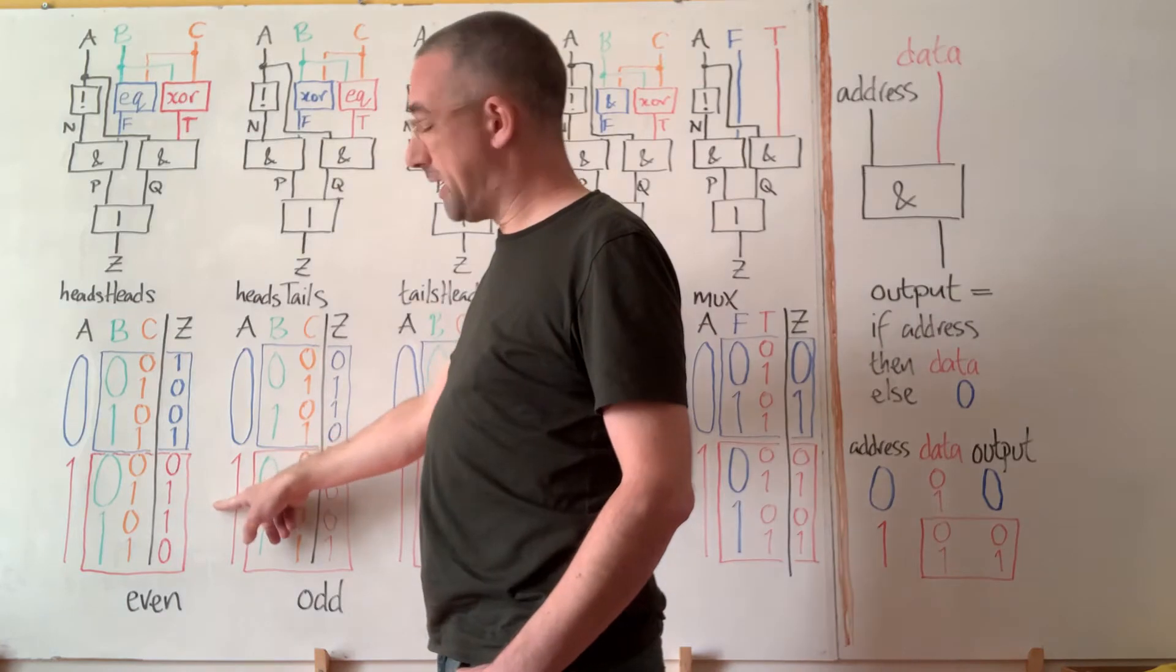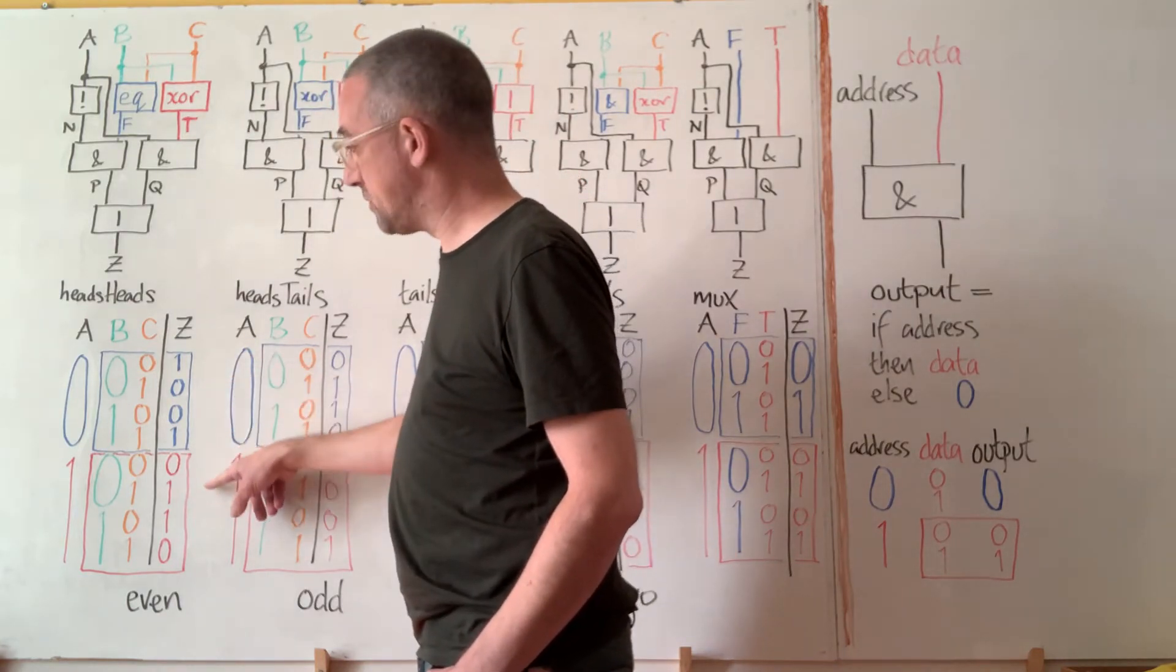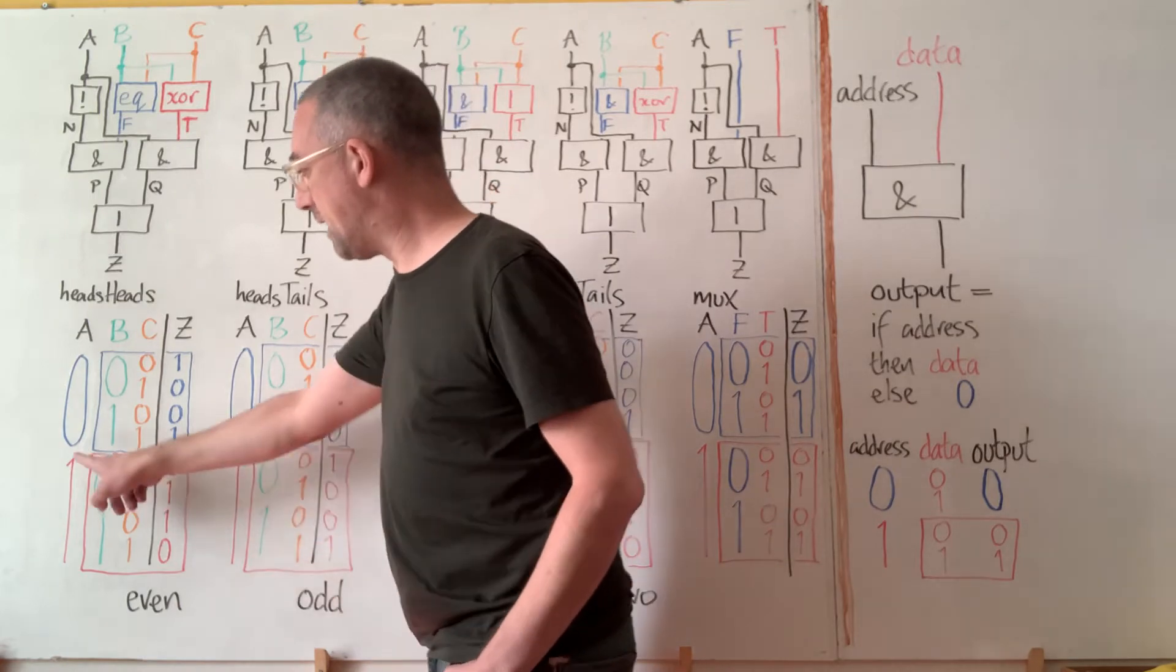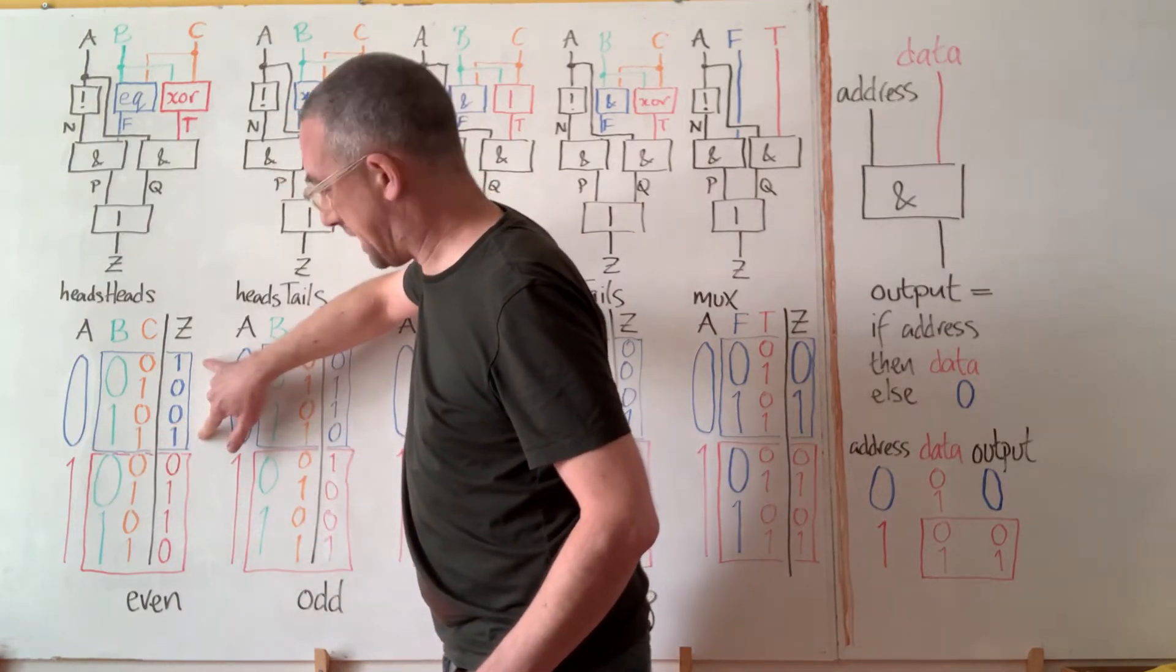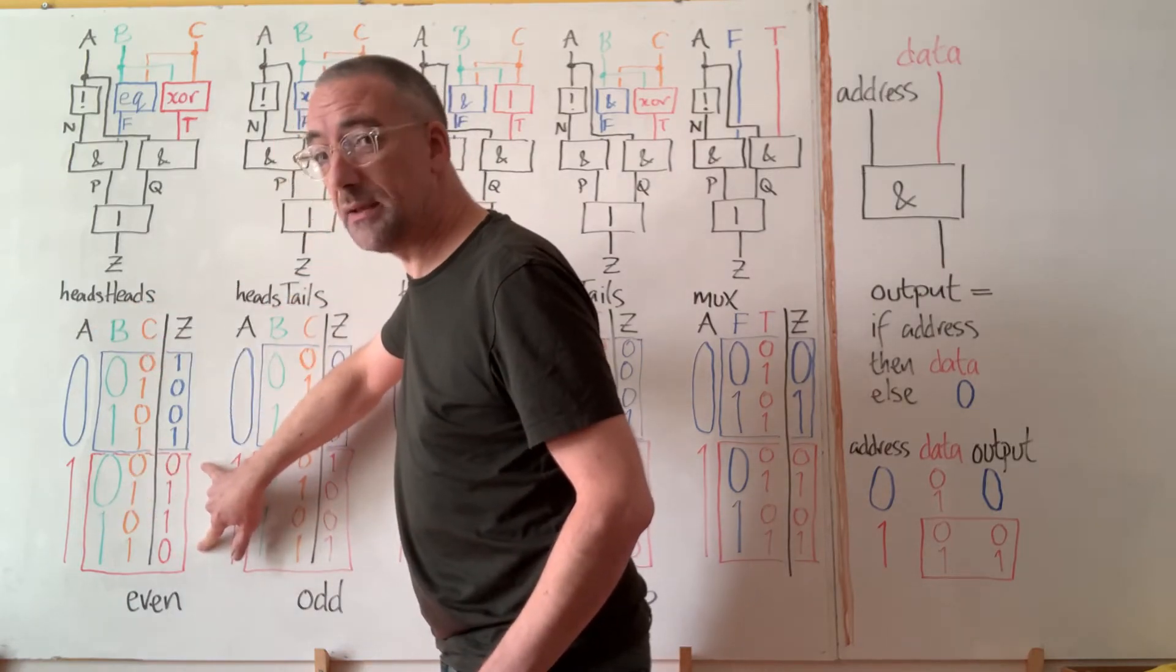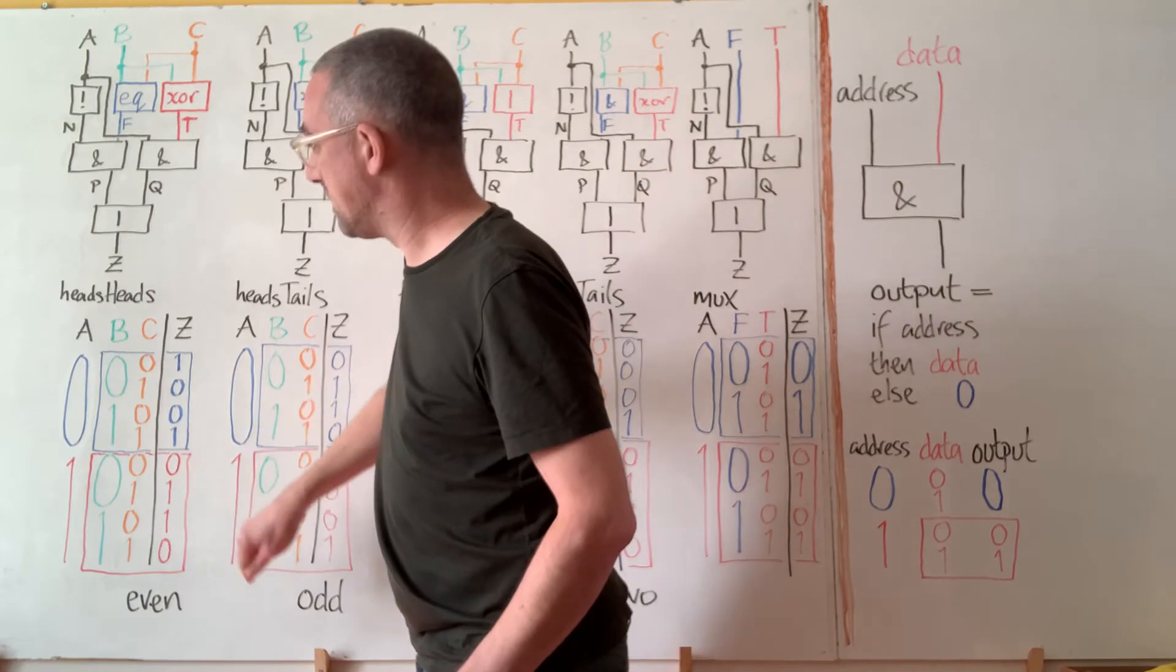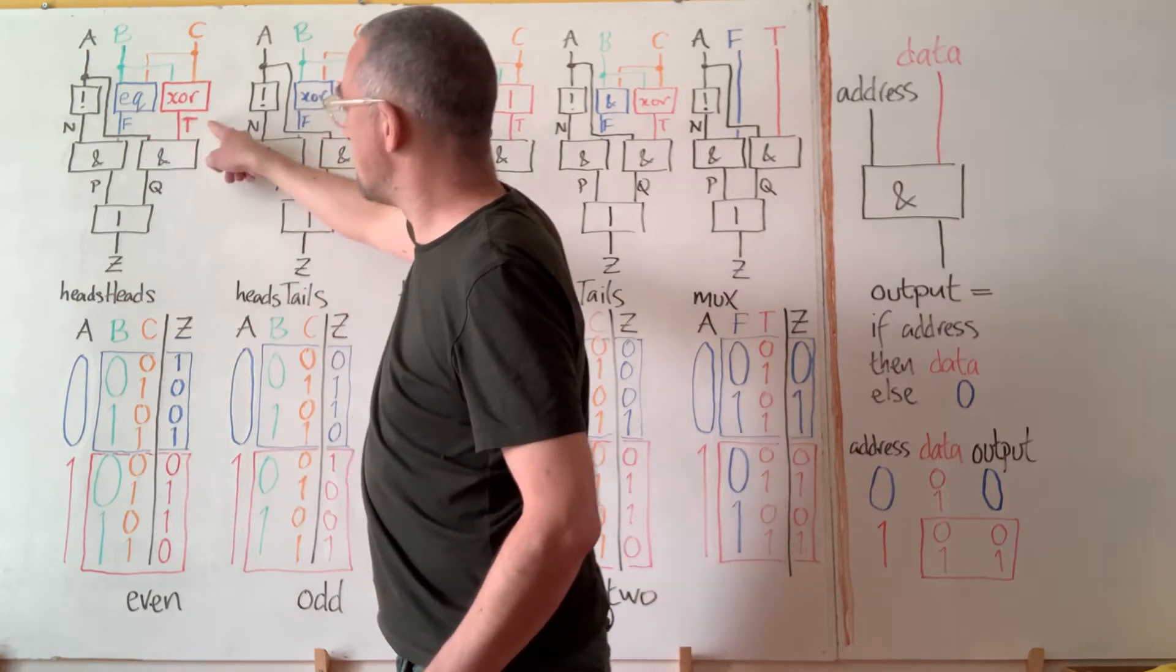And that's reflected in the truth table. The truth tables in each case split into two halves. If A is zero then we get exactly the equality test of B and C. If A is one we get exactly the XOR of B and C. The A is being used to choose between an equality test and an XOR.